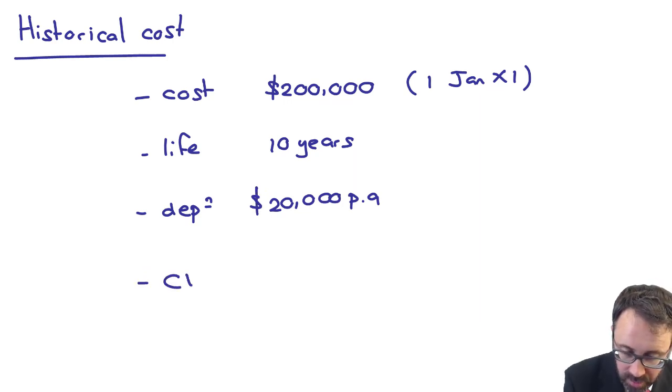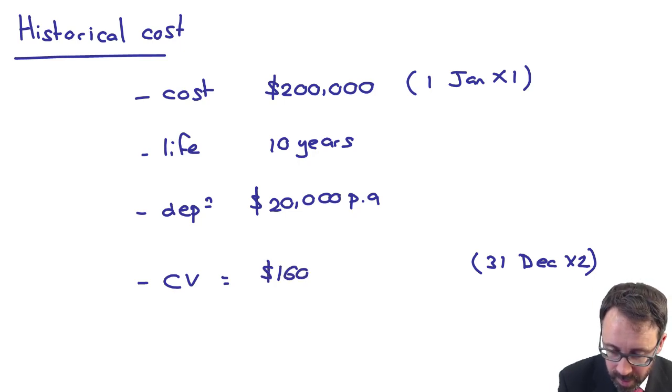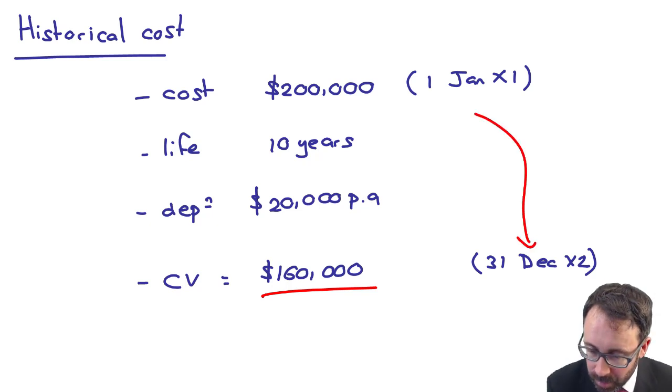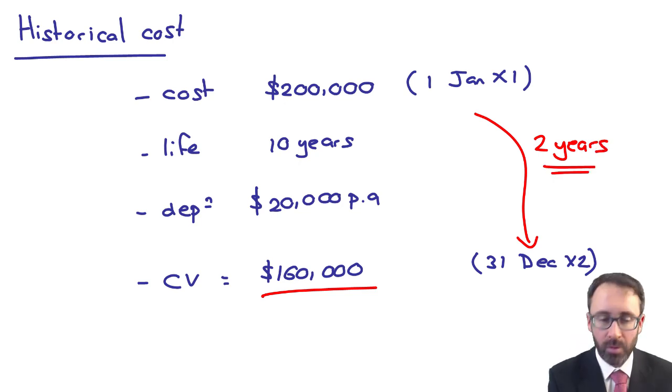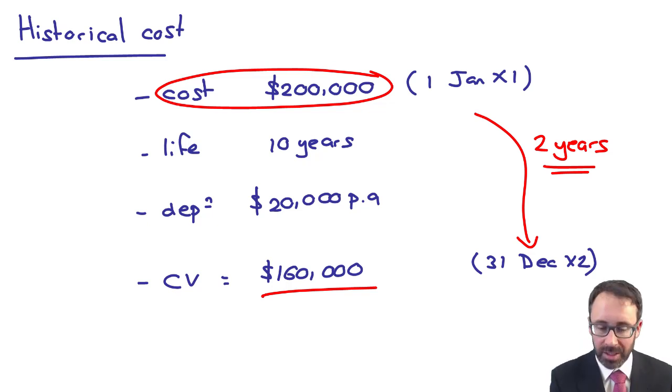The depreciation is $20,000 per annum. So on a historic cost basis, the carrying value on the 31st of December X2, that's two years worth of depreciation at $20,000 per annum. Cumulatively, it's $40,000, which gives me a carrying value of $160,000. After two years, all of X1, all of X2. And that's how you measure that asset based upon a historical cost. You look at the price that you paid initially to enter into that transaction.